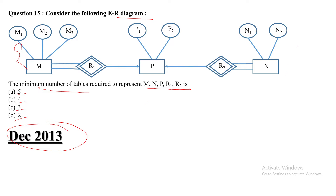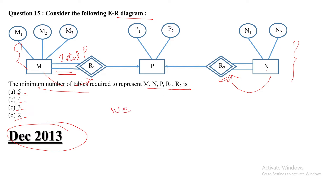First you must try to understand this ER diagram. You can see here double lines — double lines indicate total participation. M has total participation in R1, N has total participation in R2, and R1 and R2 are identifying relationships. That is why M and N both are weak entities.